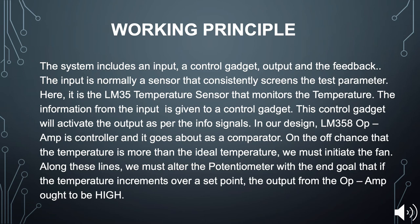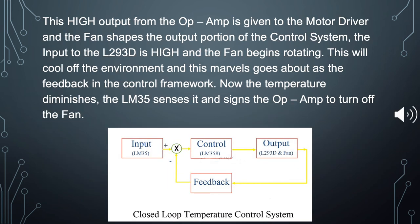The control device will activate the output based on the input signals. The LM35 sensor feeds the op-amp, which acts as a comparator. If the temperature exceeds the ideal temperature setpoint, we need to activate the fan. The potentiometer sets the threshold so that when temperature rises above the setpoint, the high output from the op-amp drives the motor driver and the fan starts rotating. This cools the environment, which acts as feedback. Once the temperature decreases, the LM35 senses it and signals the op-amp to turn off the fan.